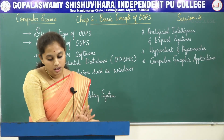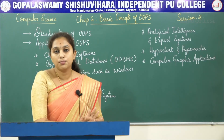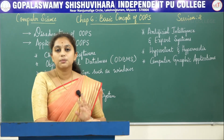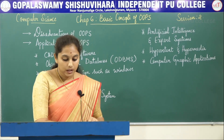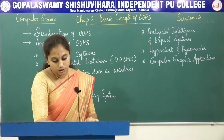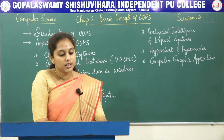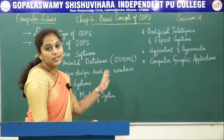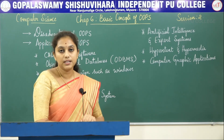For five-mark questions, they will usually ask: write the difference between procedure-oriented and object-oriented programming models. The second five-mark question is: explain the advantages of OOPs — mention all the advantages. The third question is: write the disadvantages of object-oriented programming. The fourth question is: list out all the real-time applications of OOPs.